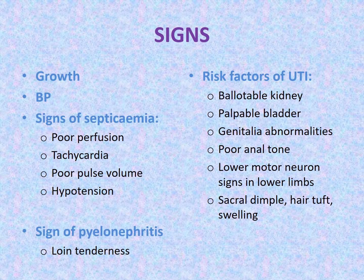When examining a child suspected to have urinary tract infection, we need to plot the weight and height on the growth chart, as a child with recurrent UTI, especially complicated with renal impairment, may have failure to thrive. Blood pressure can be high in renal impairment. If the child has pyelonephritis complicated with septicemia, he or she may have signs of poor peripheral perfusion such as cold, pale hands with capillary refill time more than 2 seconds, tachycardia, poor pulse volume, and hypotension.